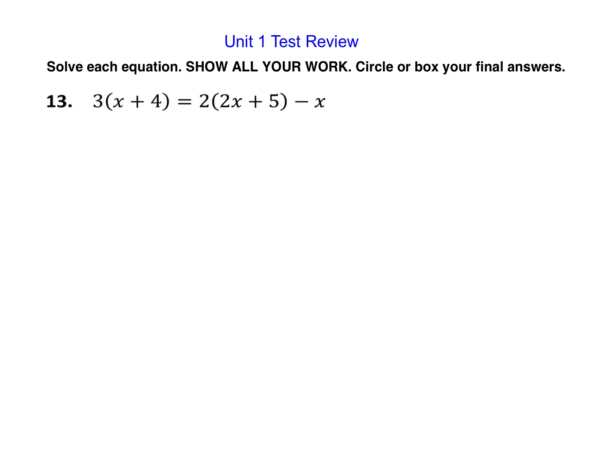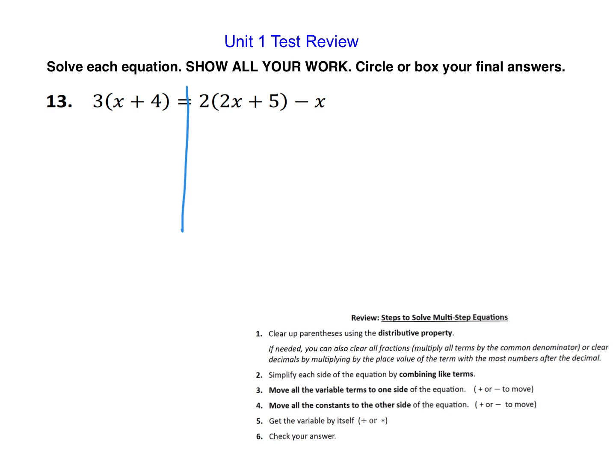For question number 13, we also have a problem with variables on both sides, but this problem involves the distributive property. There's distributive on both sides. Let's start on the left side here. We take the number outside the parentheses and multiply everything inside by that number. So I'm going to do 3 times x, which is 3x, and 3 times 4, which is 12, so plus 12. Over here we distribute the 2. 2 times 2x is 4x, and 2 times positive 5 is plus 10. Then I have that minus x on the end.